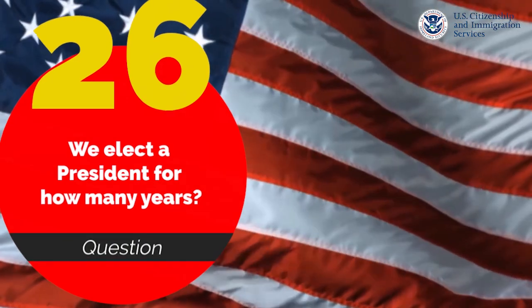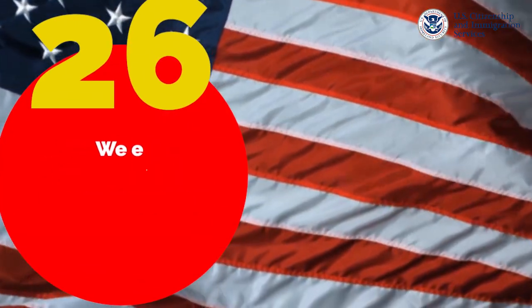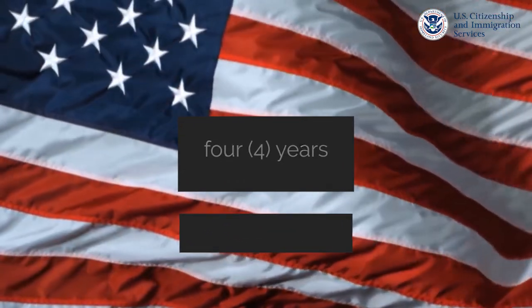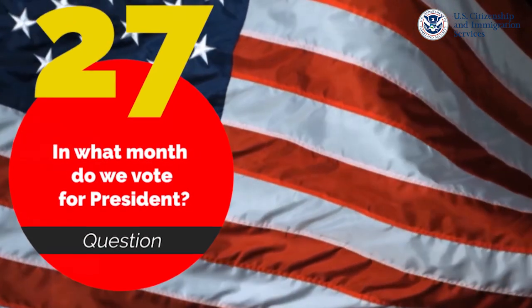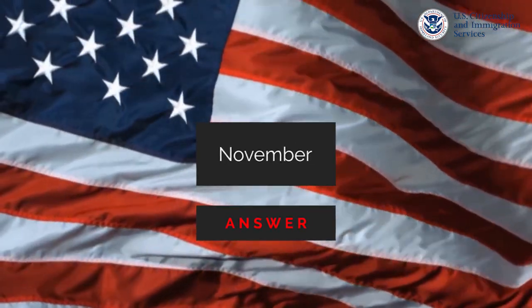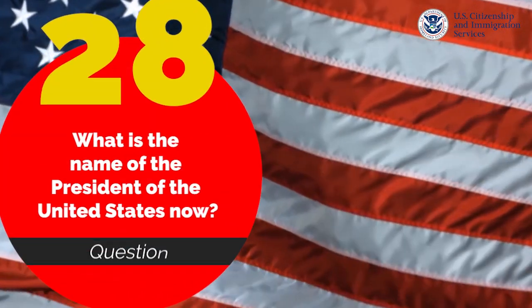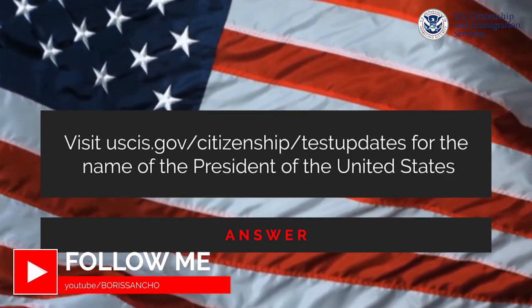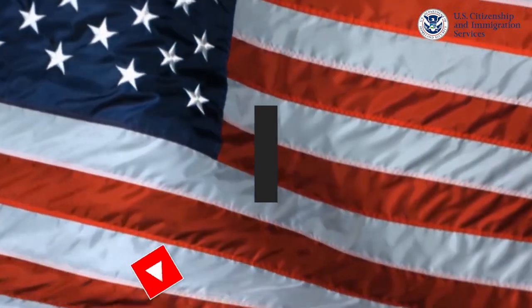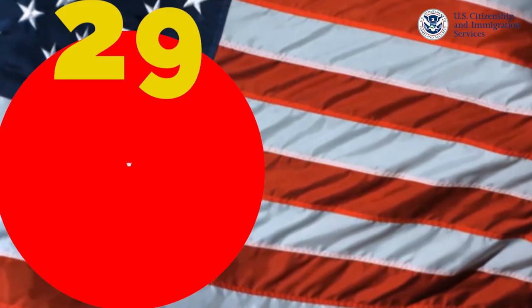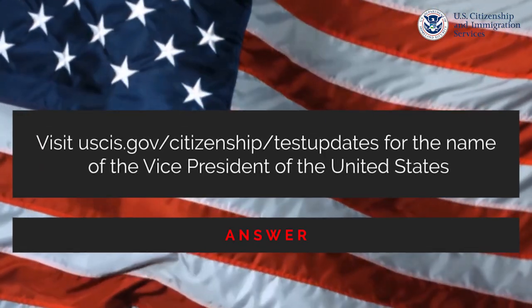We elect the president of the U.S. for how many years? Four years. In what month do we vote for president? November. What is the name of the president of the United States now? The president's name is going to be in the description of this video. What is the name of the vice president of the United States now? The name of the vice president is going to be in the description of this video.